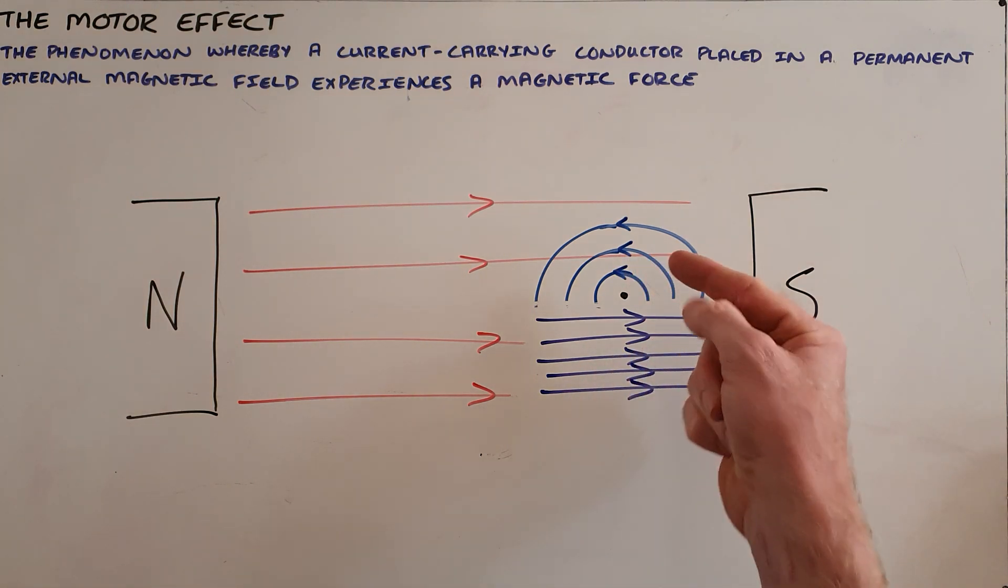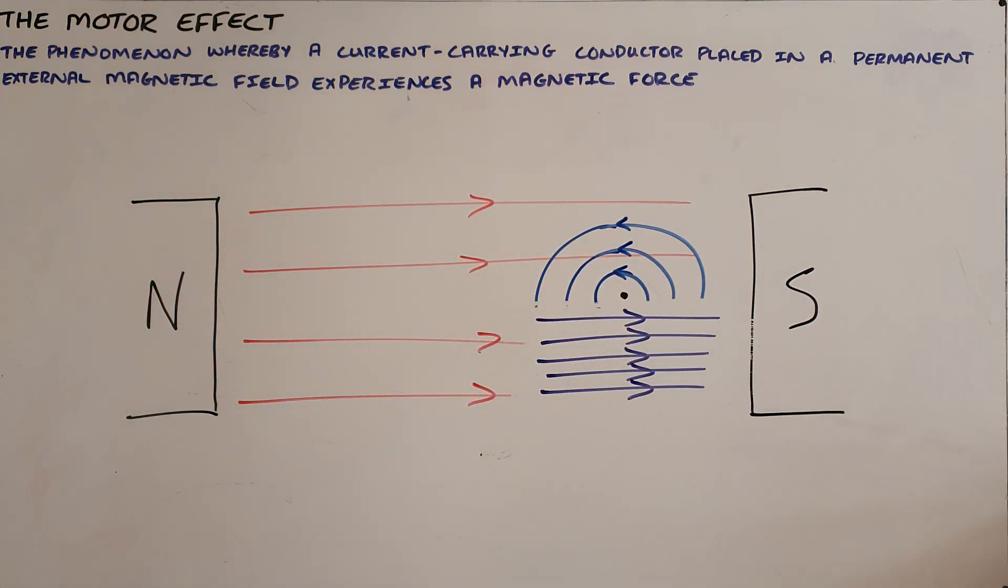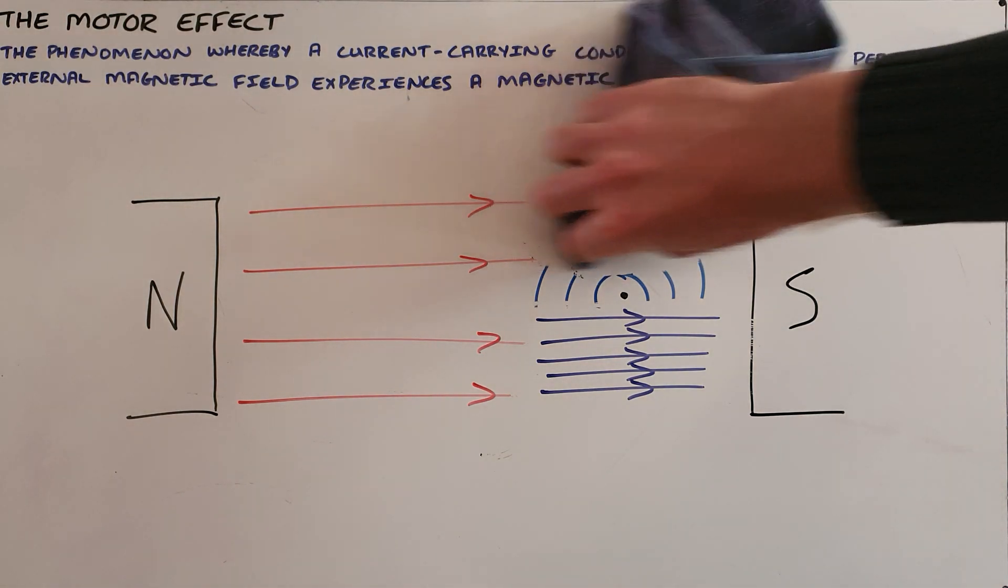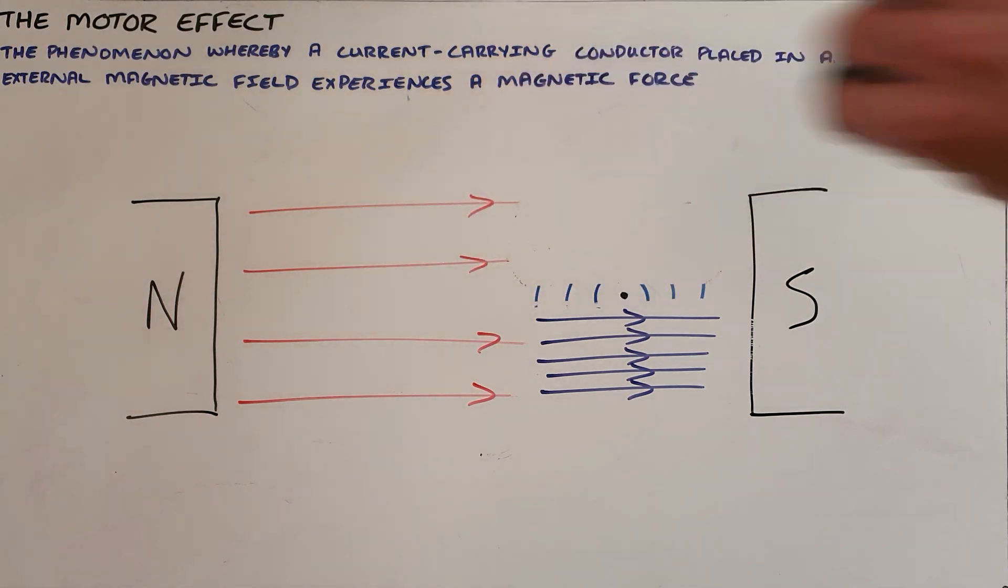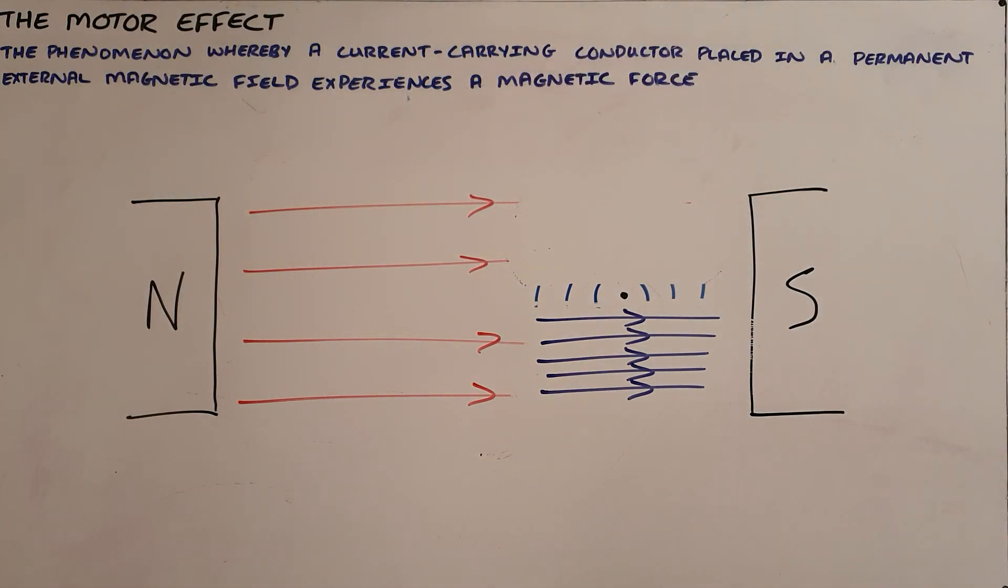At the same time above the wire, we can see that the magnetic field around the wire is in the opposite direction to that of the external magnet, and as a result there is no resultant magnetic field above the wire.